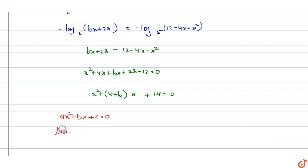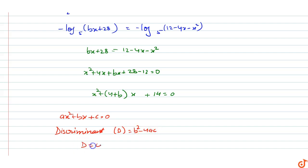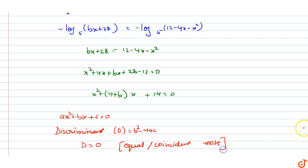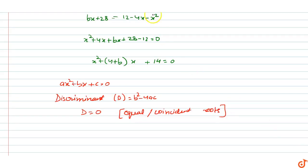The discriminant D equals b squared minus 4ac. For coincident (equal) roots, D equals 0. So we set (4 + B) squared minus 4 times 1 times 16 equals 0.